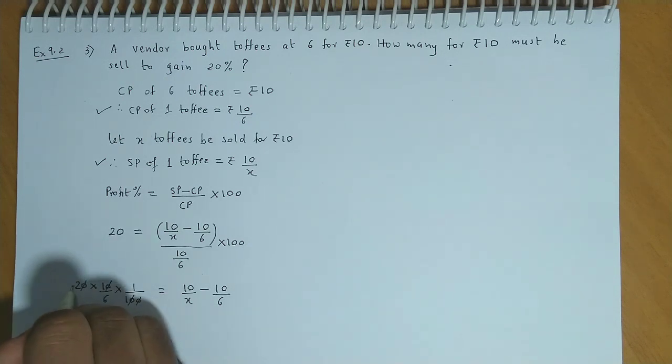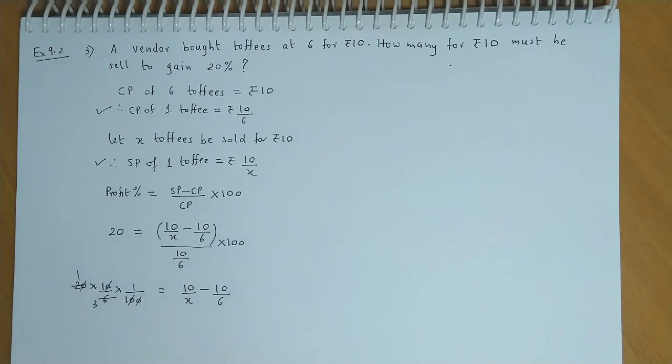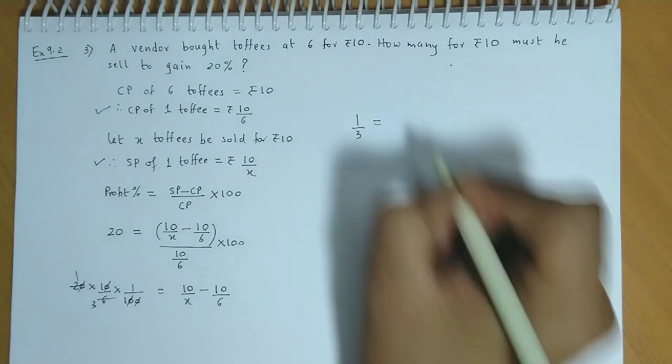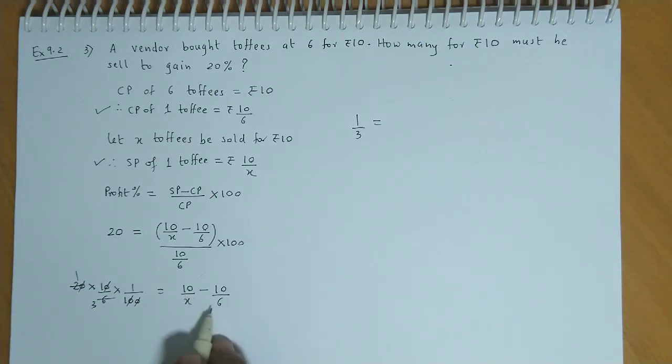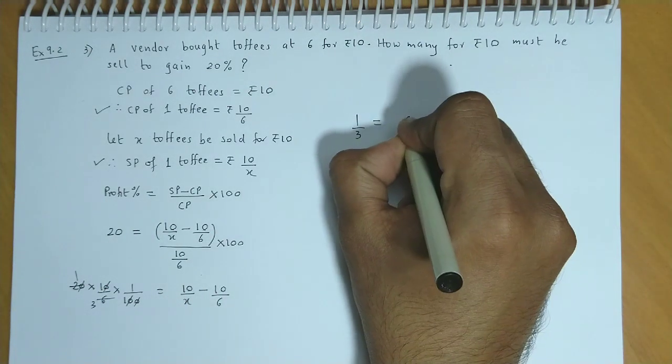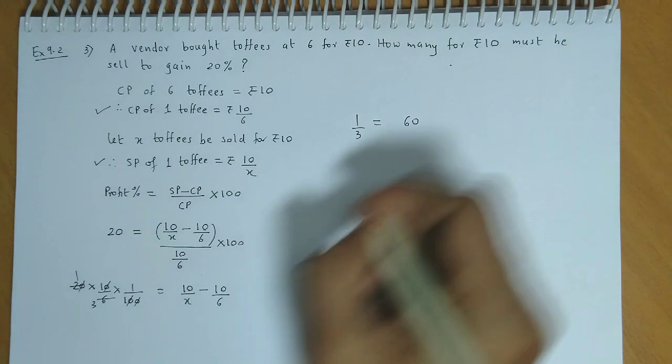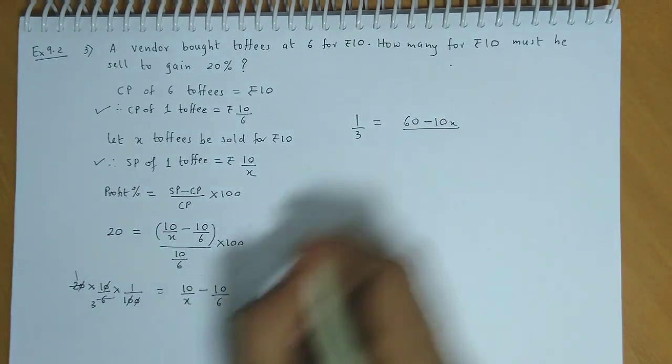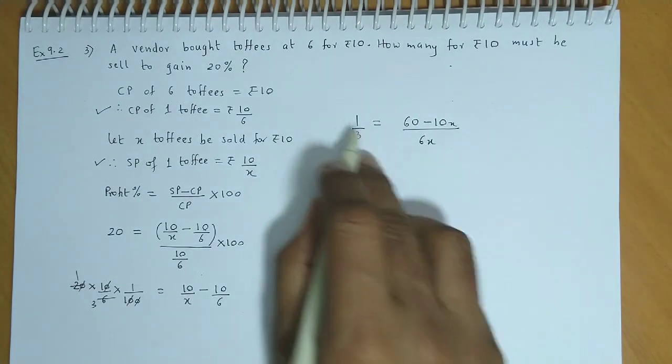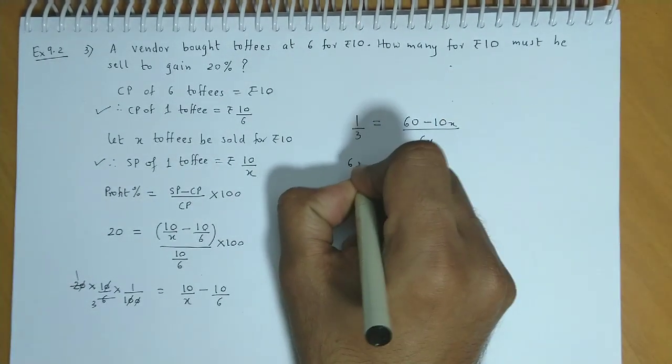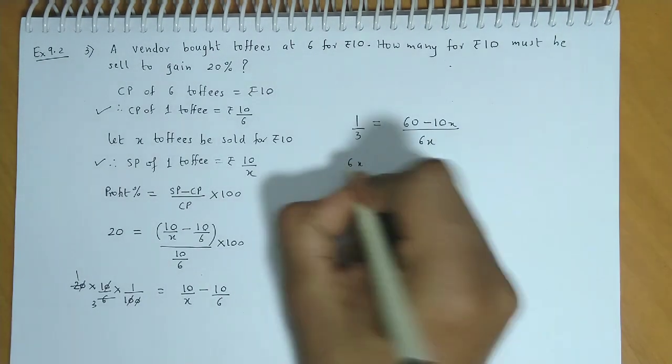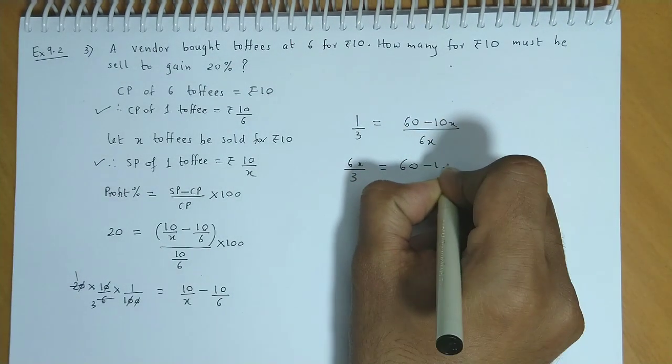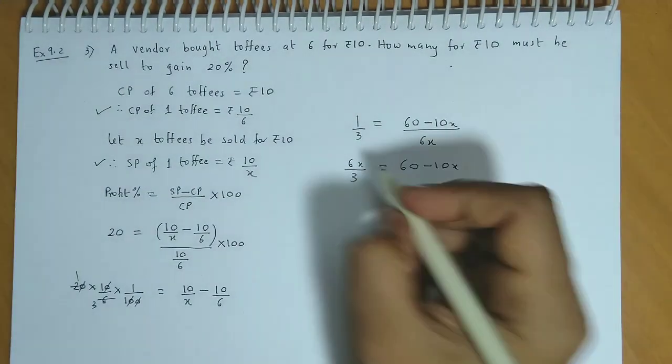This simplifies to 60 minus 10X divided by 6X. So, 6X divided by 3 is equal to 60 minus 10X.